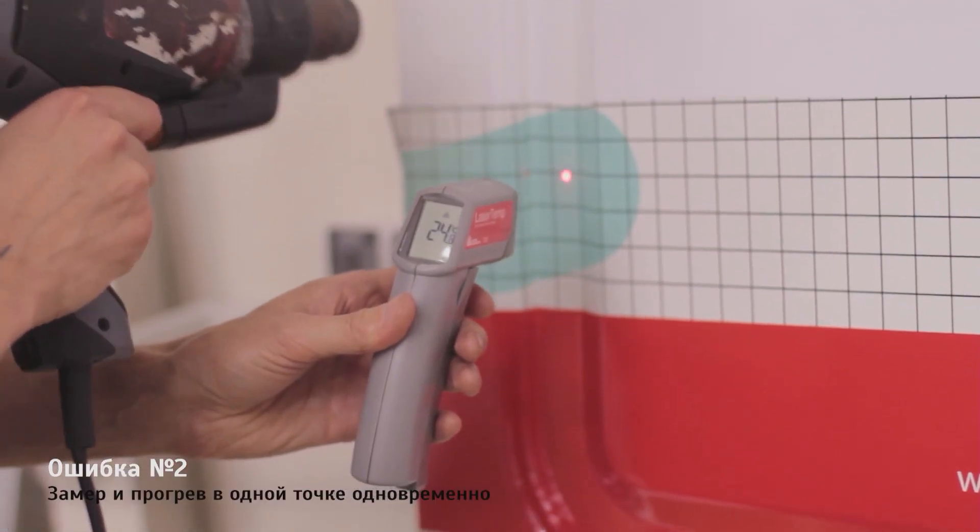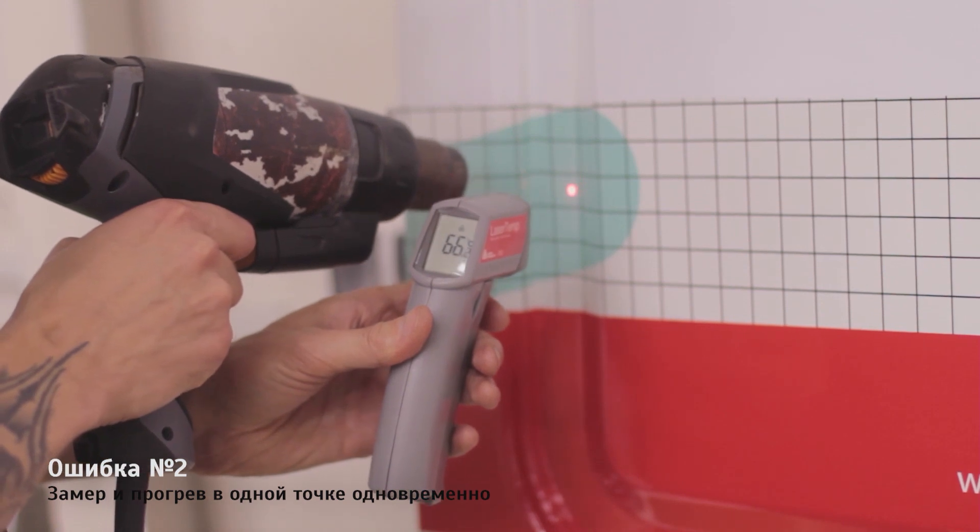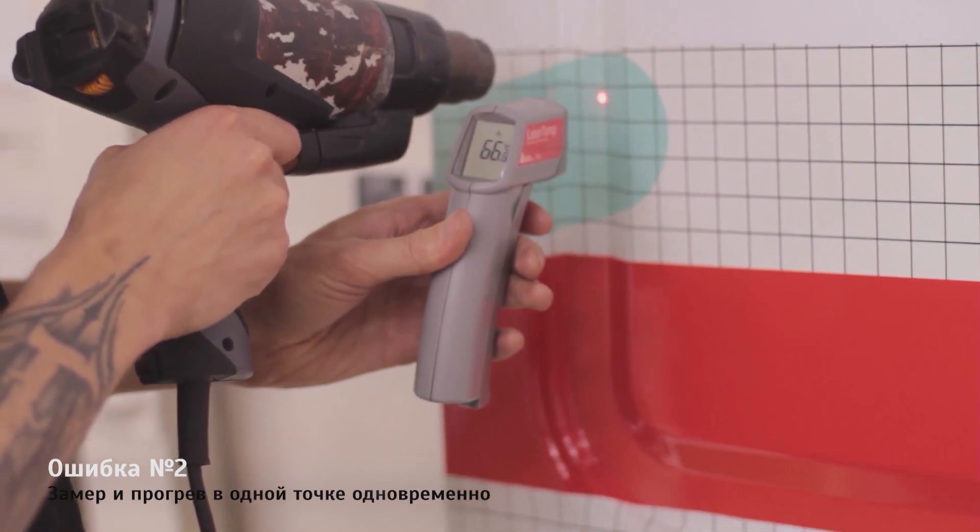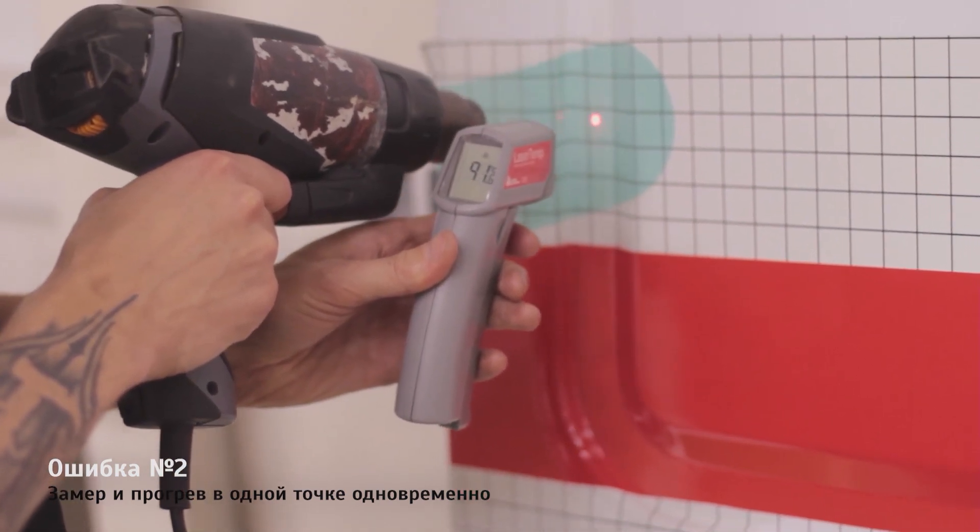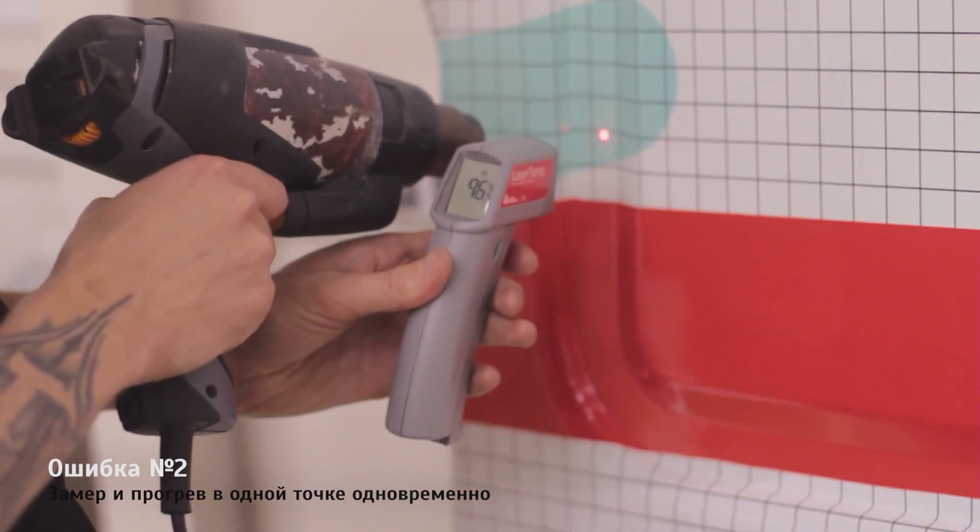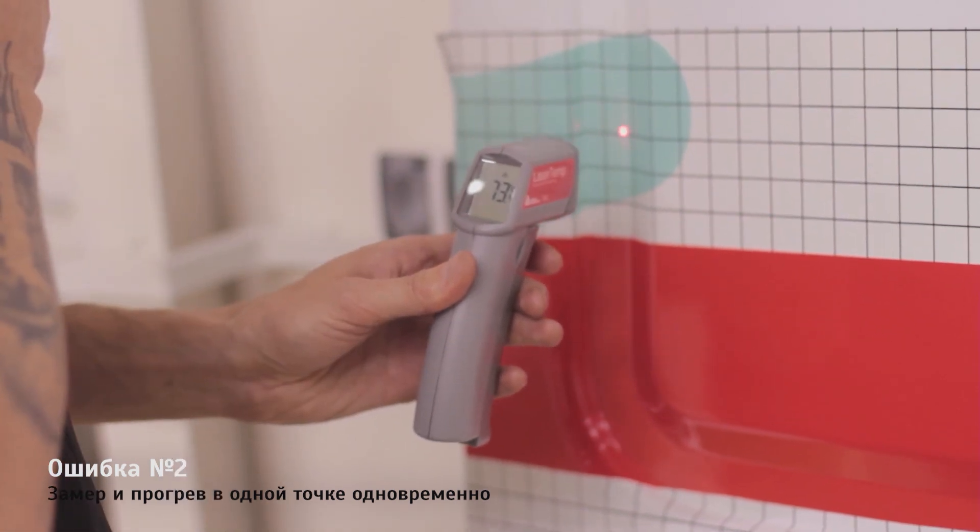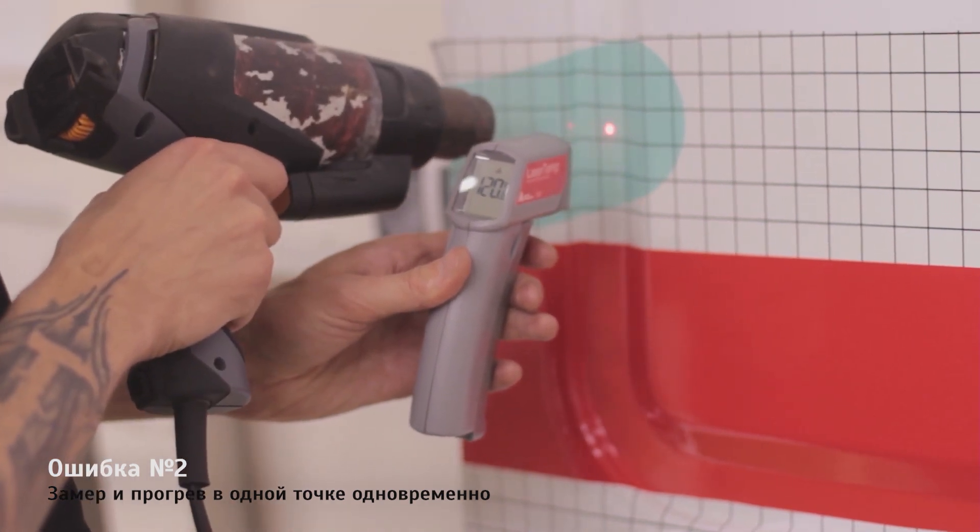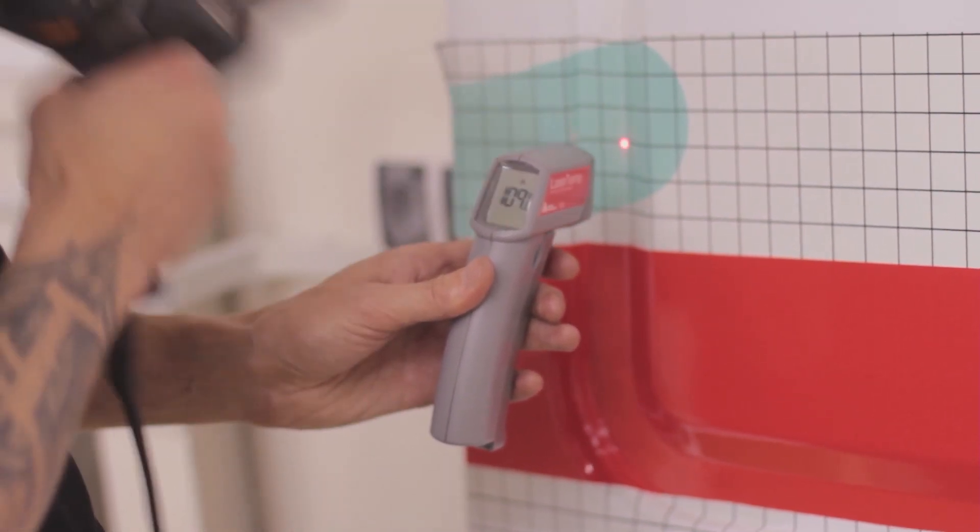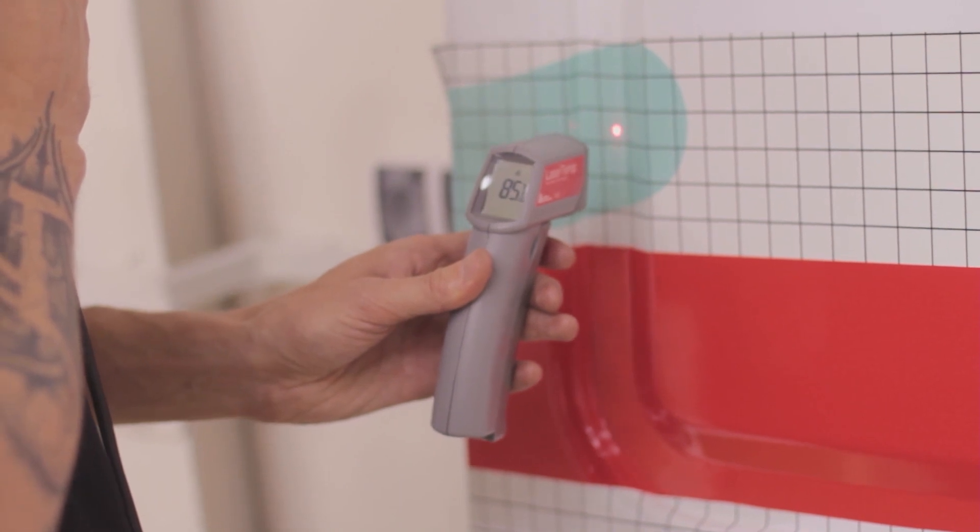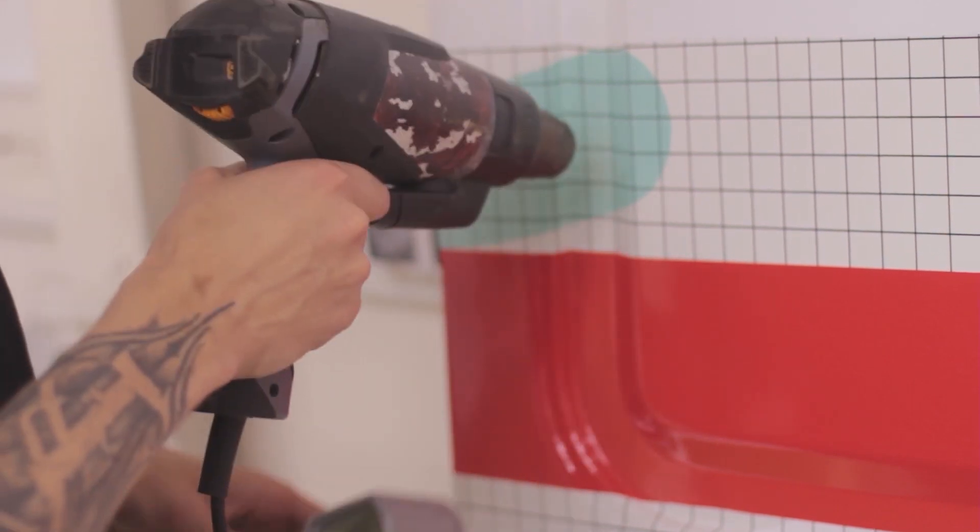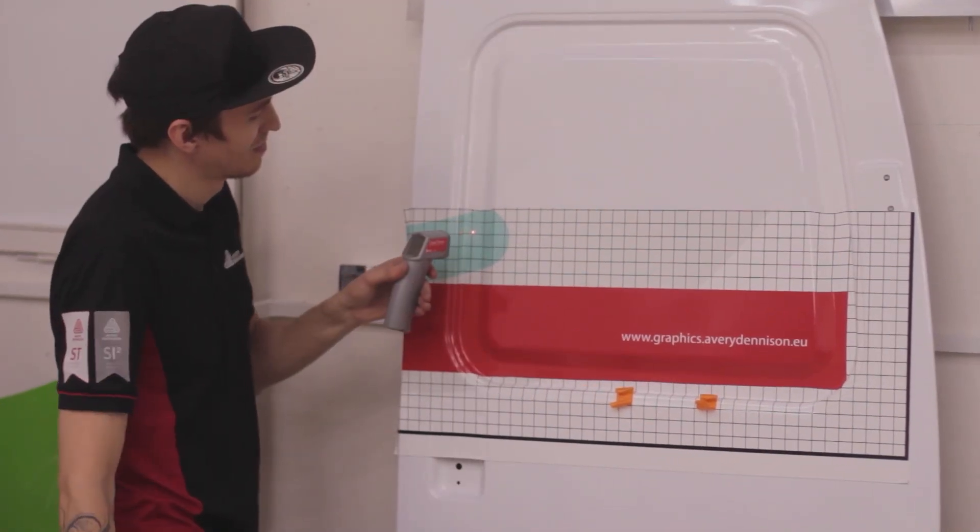Another serious and frequent mistake is when you cross the heat gun air stream with temperature measurements. Now you see that during post heating, the temperature quickly rises to 100 degrees. But when I remove the heat gun, it falls down by 30 degrees. For example, now you've seen 120, the heat gun is removed and the temperature is in fact only 85 degrees. Your measurement is only correct when you remove the heat gun and then measure the temperature.